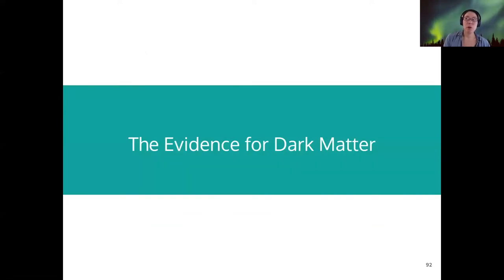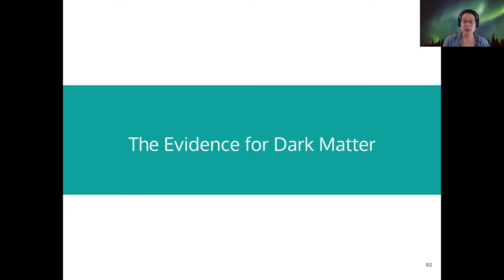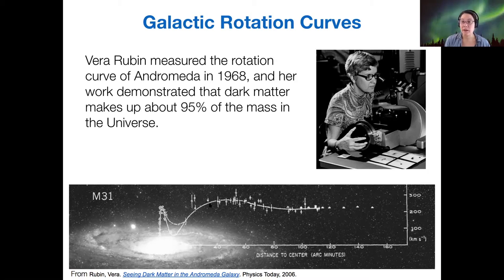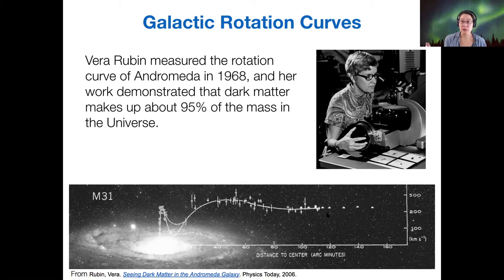When we look at our own galaxy's rotation curve, we found that it didn't look like the rotation curve for the solar system. Vera Rubin measured this same sort of rotation curve for the Andromeda galaxy in 1968, and she was able to show that dark matter seems to make up about 95% of not only our galaxy but other galaxies as well. So at this point, many rotation curves have been measured. The ones that you saw in the lab were all from Vera Rubin's paper.